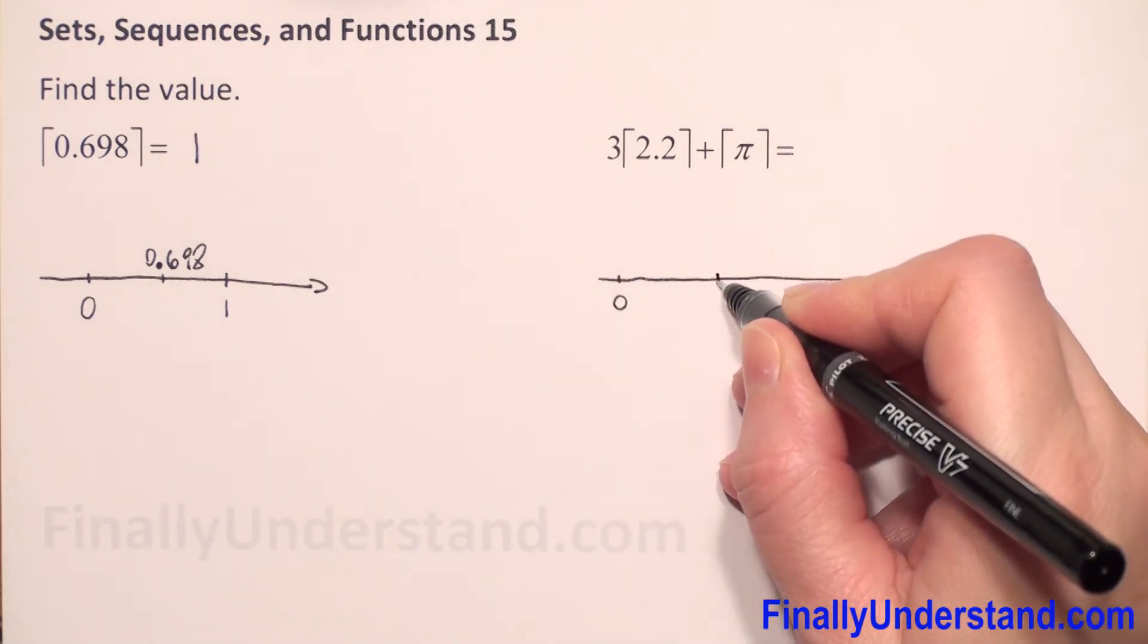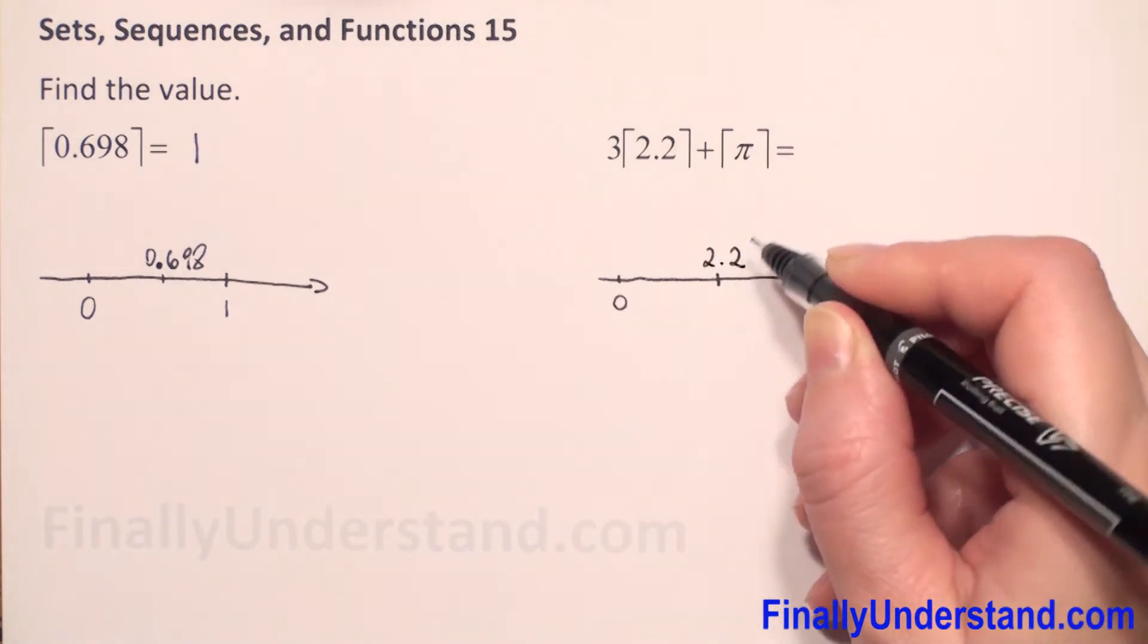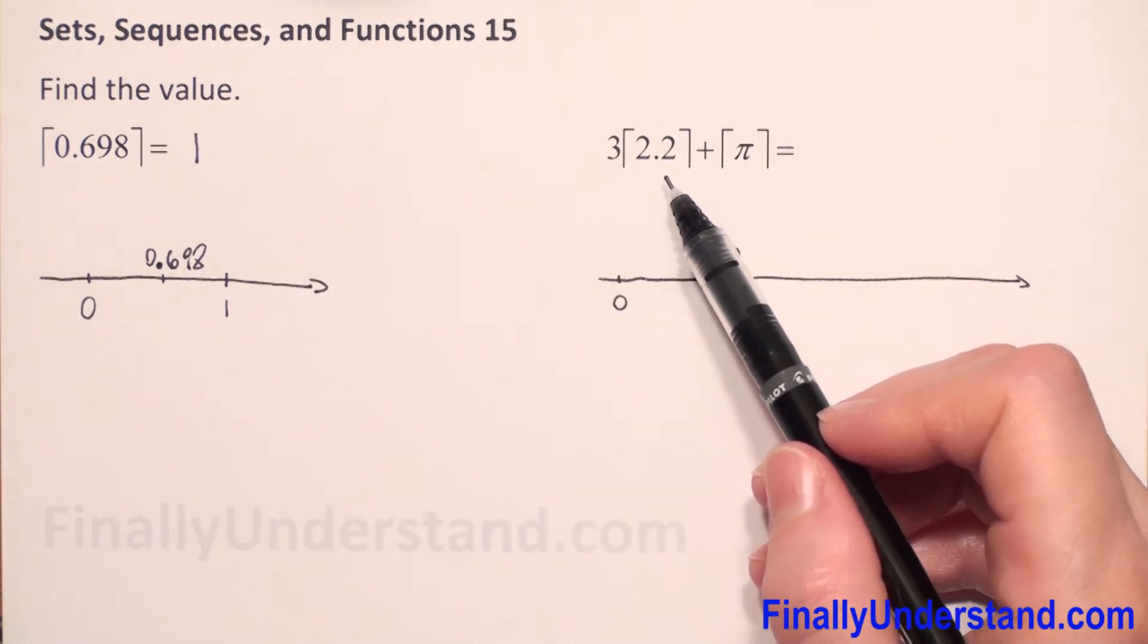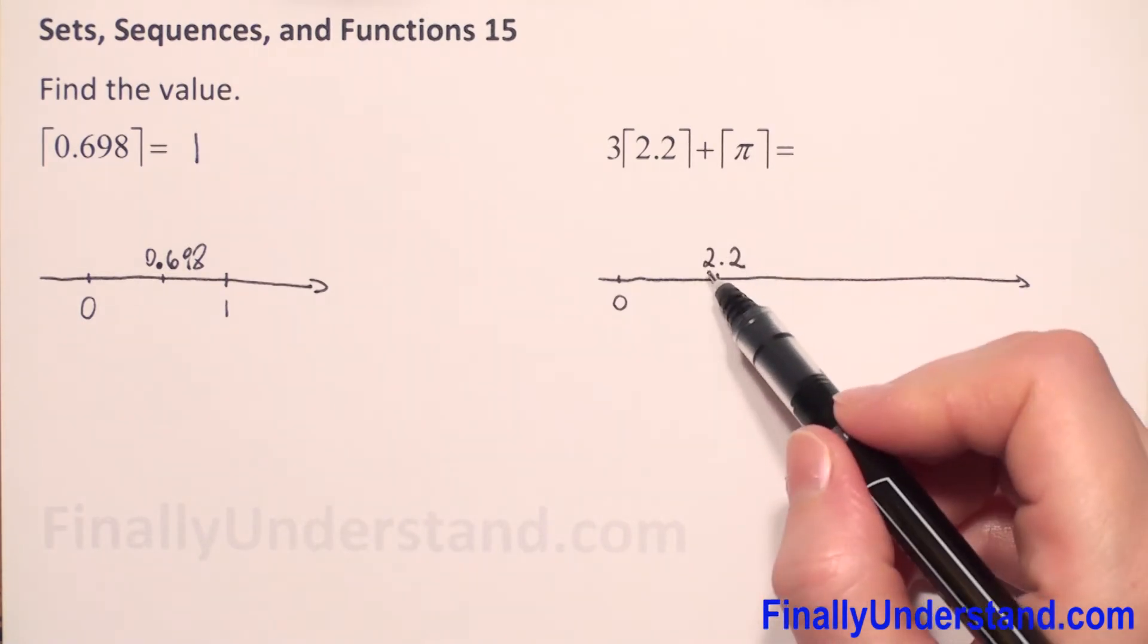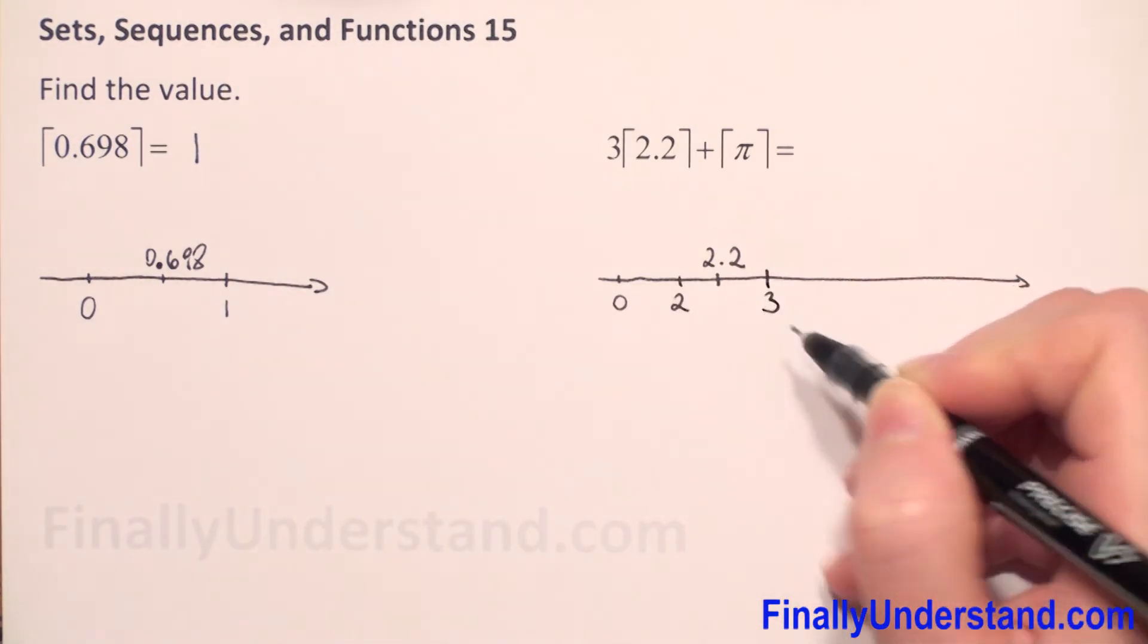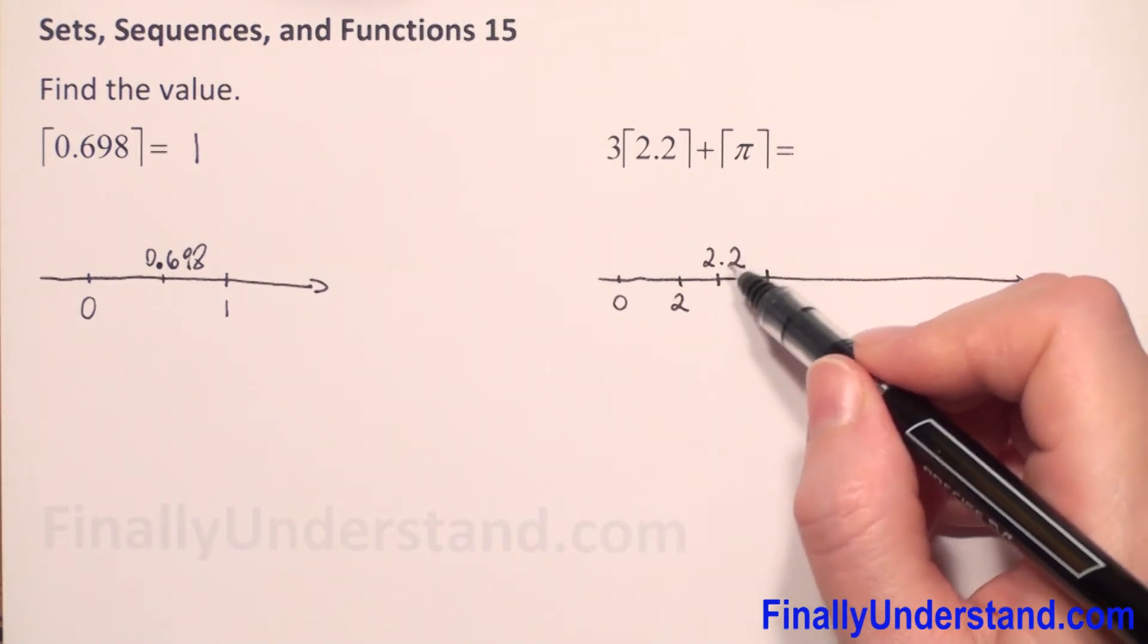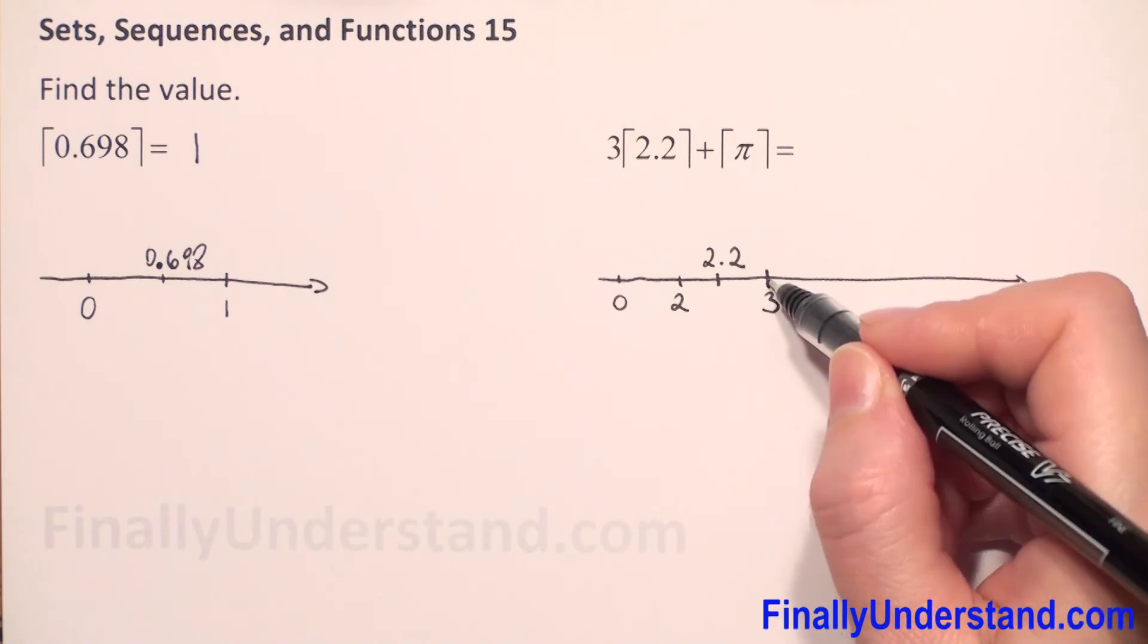So, let me put this number here. We have 2.2. Because 2.2 is not integer, because integers are the whole numbers including 0 and negative values. So, 2.2 is between 2 and 3. So, the smallest integer for this number will be 3.